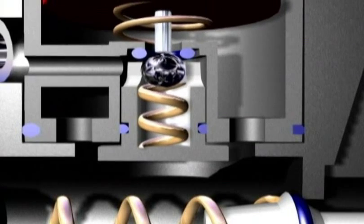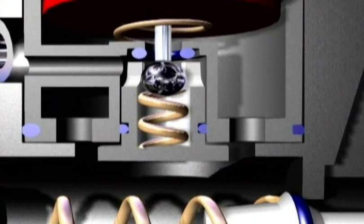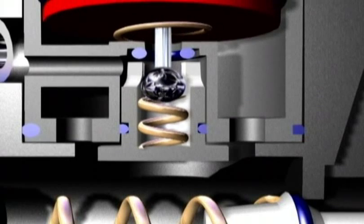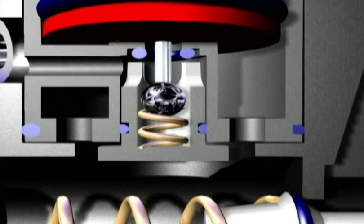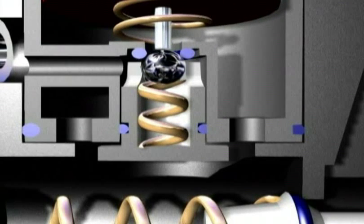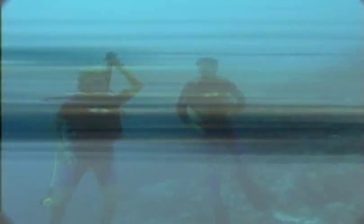This system makes it possible to measure out the quantity of air injected as a function of the pressure exerted on the inflation button. By releasing pressure on the inflation button, the ball can return to its initial position, thus interrupting the flow of air.